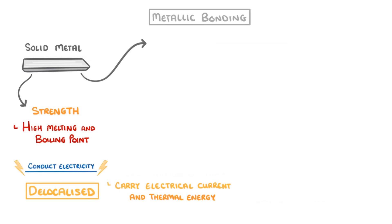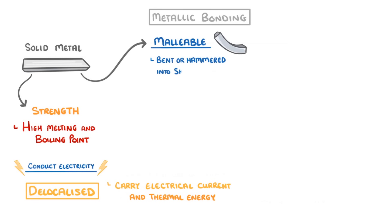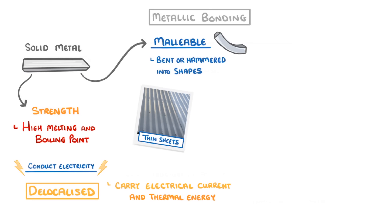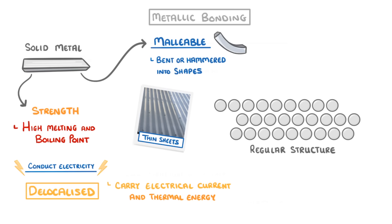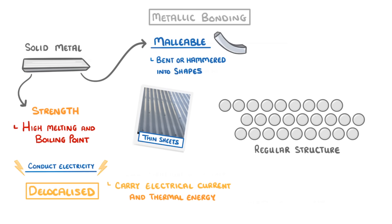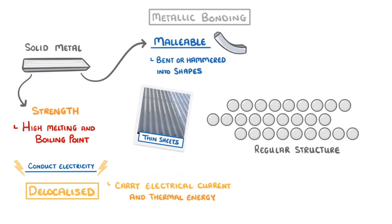Another important property is that metals are malleable, which means that they can easily be bent or hammered into shapes, for example into thin sheets. This can be a bit confusing, because we think of metals as being strong, and in many ways they are. But the fact that metals have such a regular structure means that the different layers can slide over one another, so they're not quite as fixed as you might have thought.